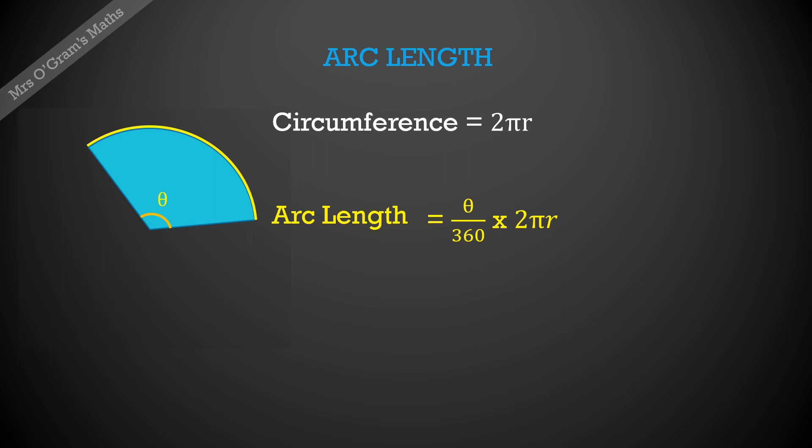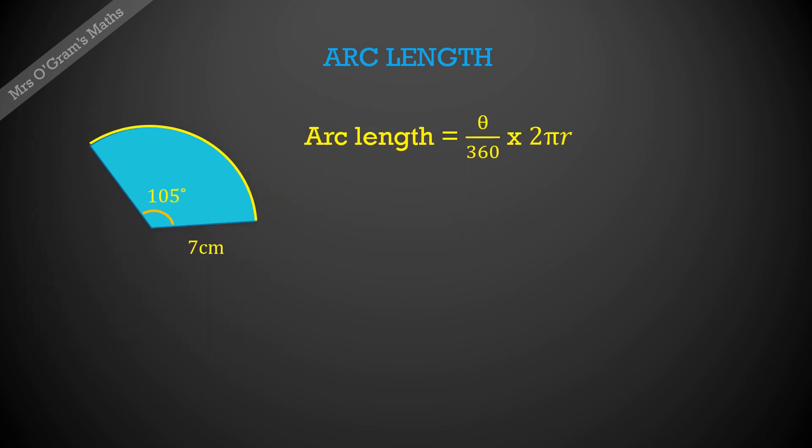So here's an example: we've got 105 degrees and we've got a radius of 7 centimeters. To work out the arc length, we'll put it into our formula, so we've got the 105 in for θ and we've got the 7 in for the radius, and that comes to 12.8 centimeters. Note this is still just a measure of length, so it's not centimeters squared or cubed or anything, it's just centimeters—it's that distance around the outside there.